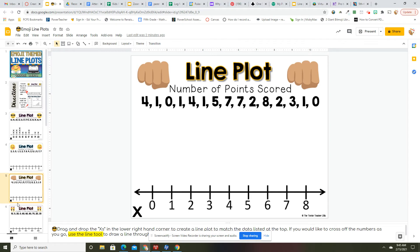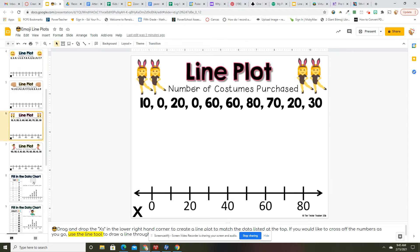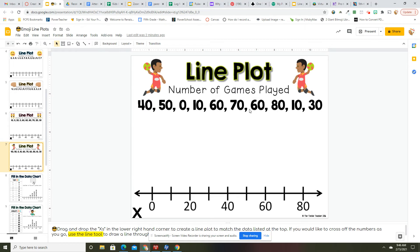Number of points scored and number of costumes purchased and the numbers of games played. So this one's got, it goes by 10. So 0, 10, 20. So 10 would be right here if you have a 10. So just be looking at that.